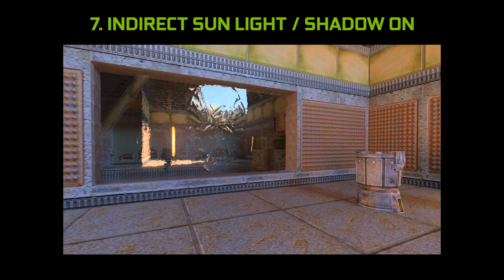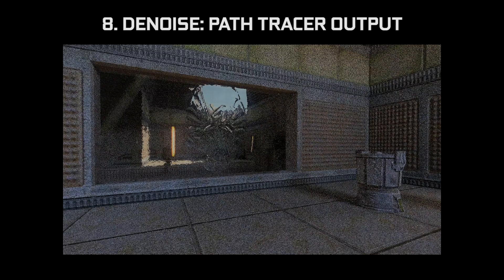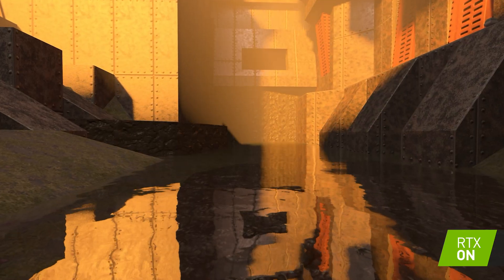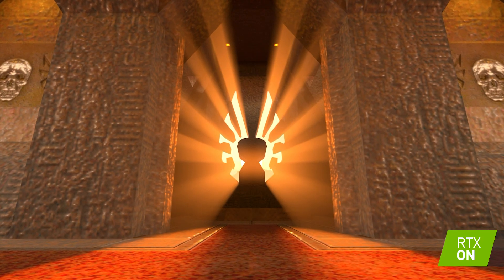Now we can actually repeat a number of these steps indefinitely, depending on how much recursion or how many bounces you want to do, and that's a trade-off between image quality and performance. The final step is denoising. For real-time rendering, we'll typically shoot a few to a few dozen rays per pixel. Denoisers take that relatively sparse sampling and construct the final picture through a sophisticated combination of spatial and temporal processing. So now that we've gone through all the steps of building our path tracer for Quake 2 RTX, let's take a look at this in action.